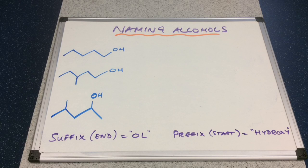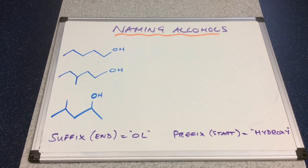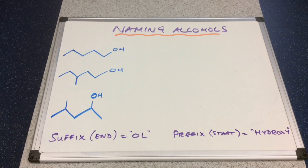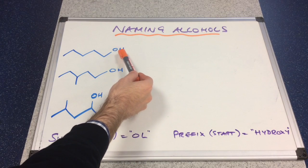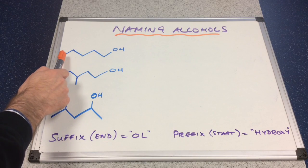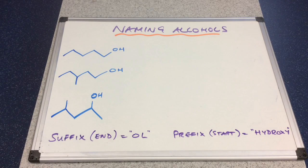The prefix idea will only come into play when I put another set of alcohols onto the board, so don't worry about that just yet. The first one is straightforward: we've got one, two, three, four, five carbons in a continuous chain, so it's pent-, and we've got the OH group on carbon number one. We count to get the shortest number, so this is pentan-1-ol.